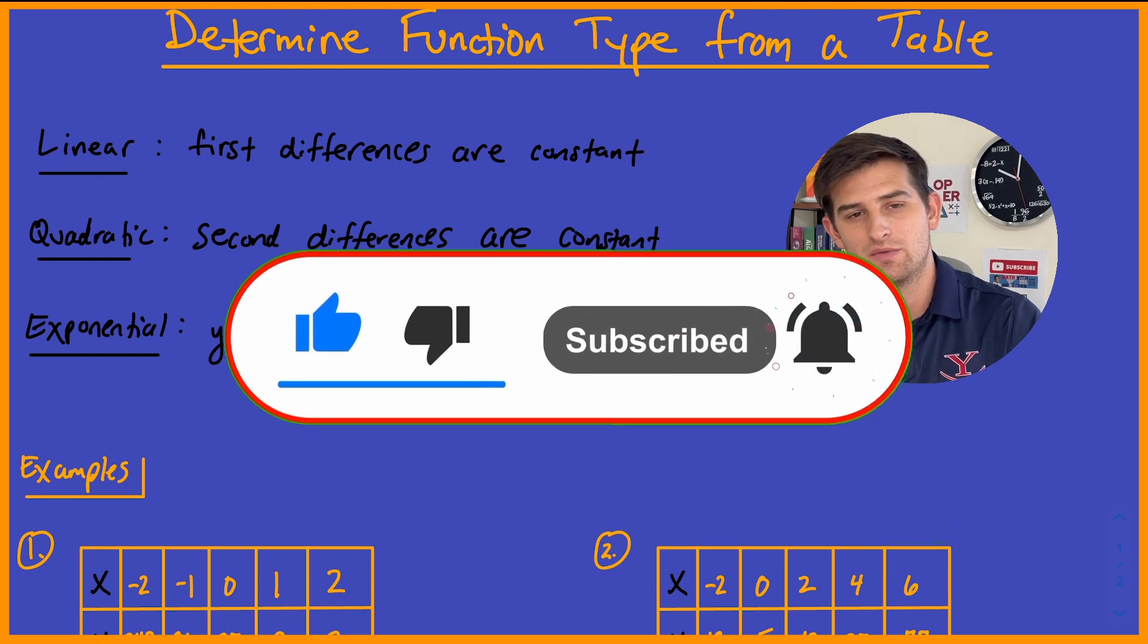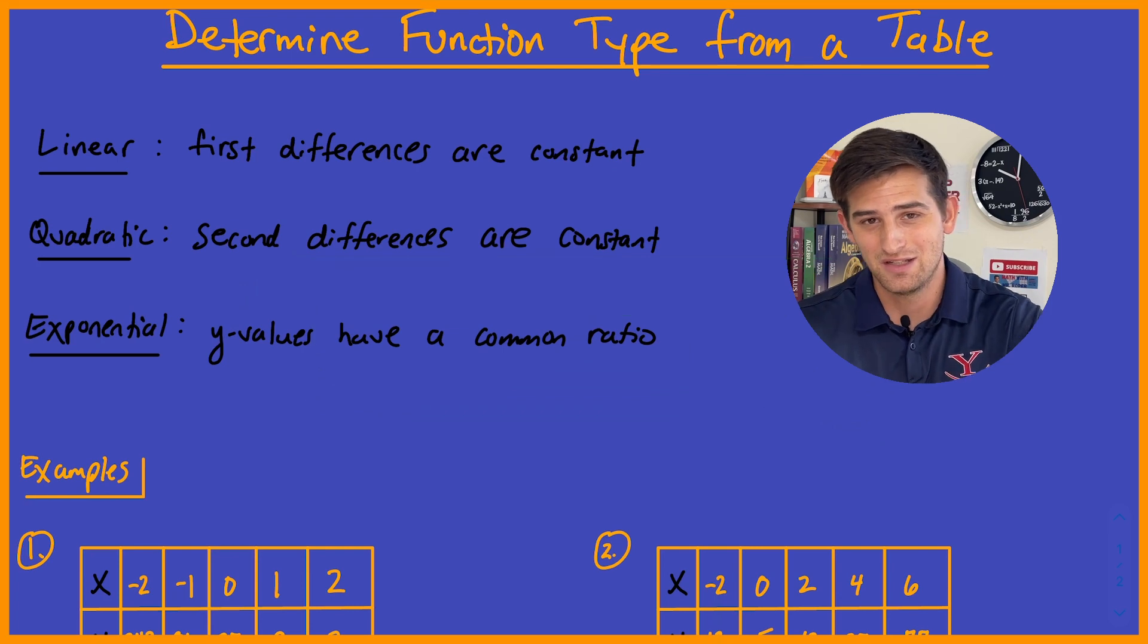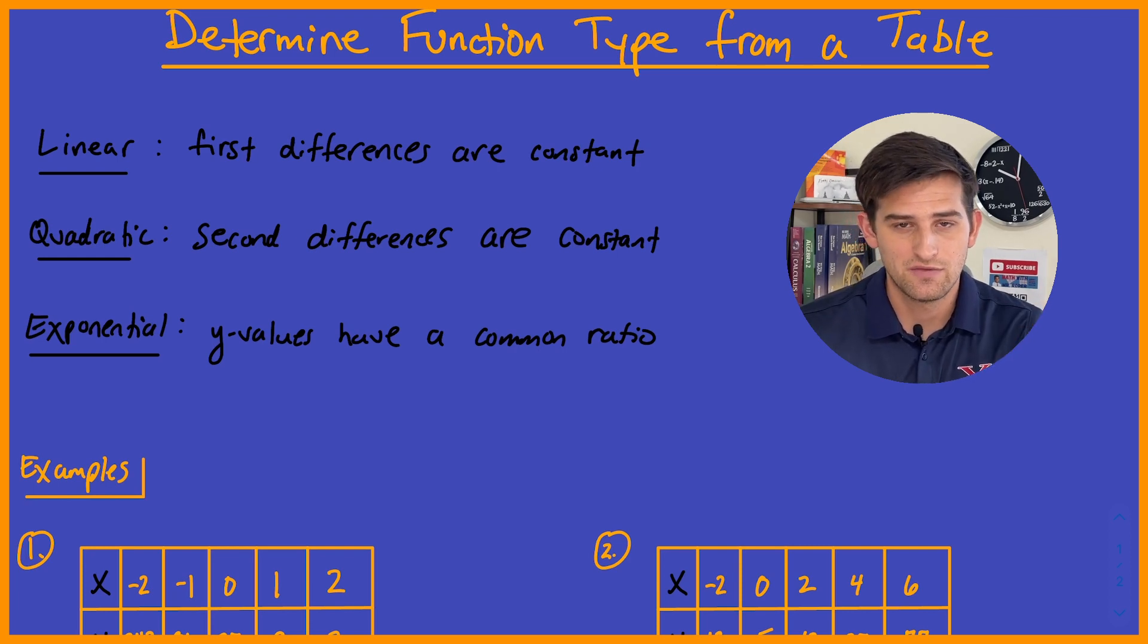So in Algebra 1, we work through and talk about how do we know it's a linear function, how do we know it's quadratic, exponential, and so forth. Those are the three main types of functions we're going to focus on in this video, but we do know how we can identify a cubic function, a polynomial function to the fourth degree, and so forth.